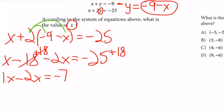I have 1x taking away 2x, so I'm left with -x = -7. The negatives cancel, so x = 7.